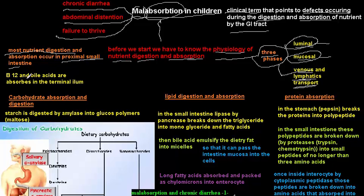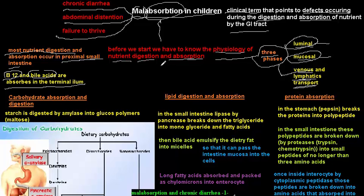Most digestion and absorption occurs in the proximal small intestine. Vitamin B12 and bile acids are especially absorbed in the terminal ileum. So while the small intestine is the main site, the terminal ileum specifically handles B12, bile acids, and other substances.